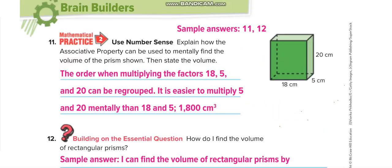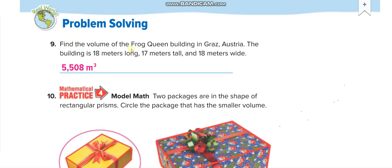Let us move to the next one here. Find the volume of the frog coin building in Grace, Australia. The building is 18 meters long, 17 meters tall, and 18 meters wide. To find the volume of the building, what you guys will do: 18 meters long and 18 meters wide, 18 times 18, it will be a square area. Then you will multiply it by 17, the height. You will find 5,508 meters cube.